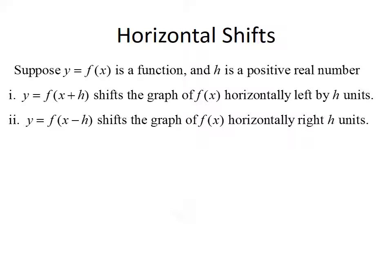The next transformation we want to talk about is horizontal shifts. Suppose you have a function y = f(x) and h is a positive real number. If you look at y = f(x + h), where h is added inside the function, that will shift the graph of f(x) horizontally left by h units. And if you look at y = f(x - h), where we subtract h within the function, that will shift the graph horizontally right by h units.